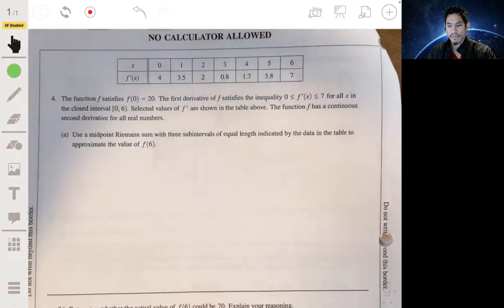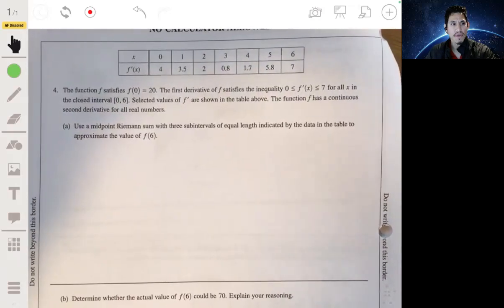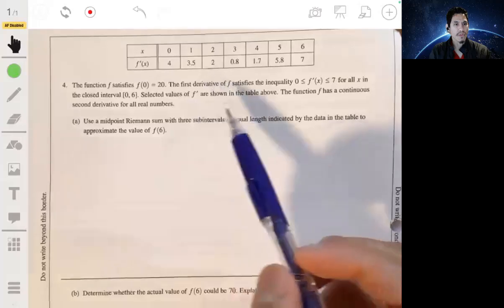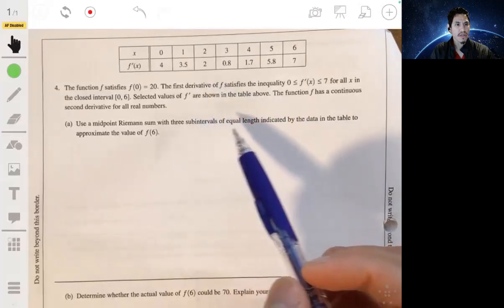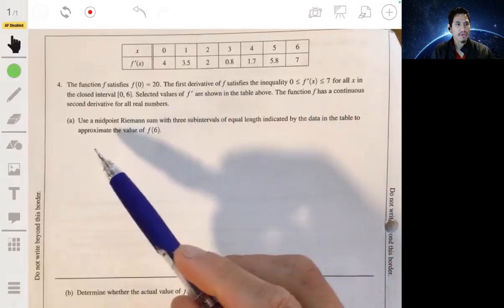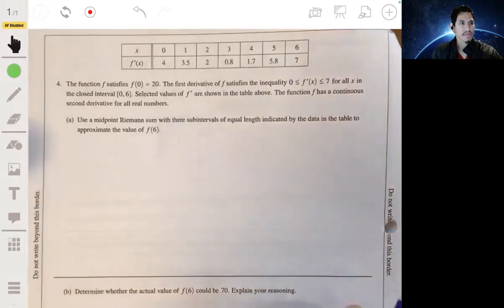Alright, in part A, we got to find a midpoint Riemann sum with three subintervals of equal length to approximate f of 6.